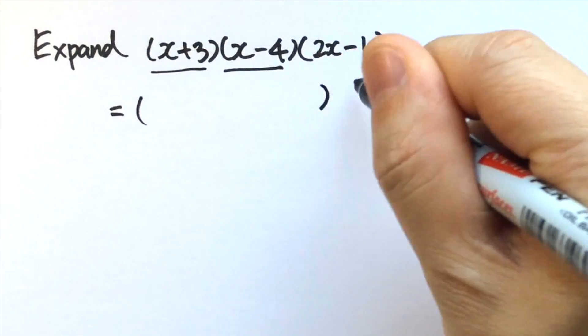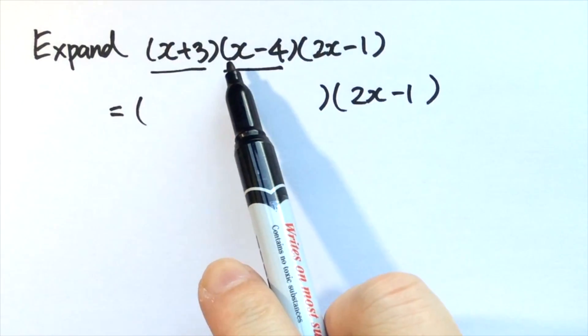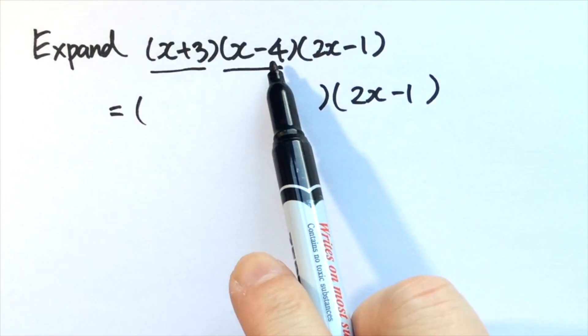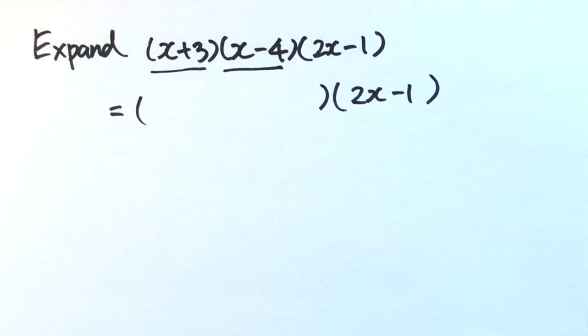So we can write it this way: use the distributive law to expand x plus 3 times x minus 4, and leave the term 2x minus 1 at a later stage.